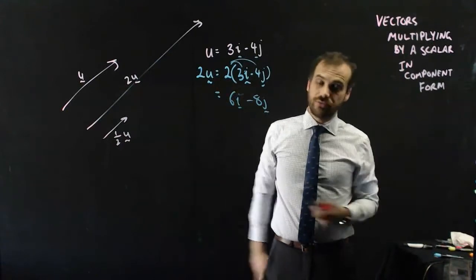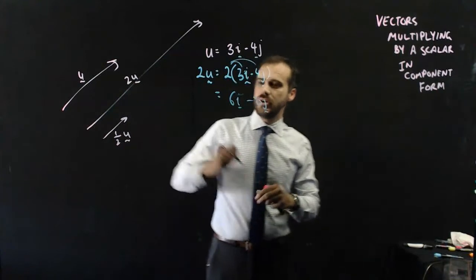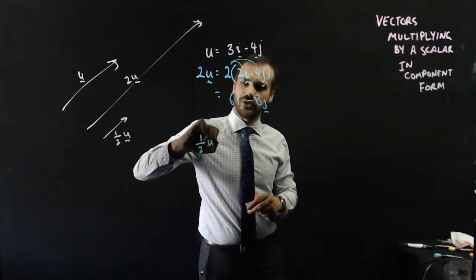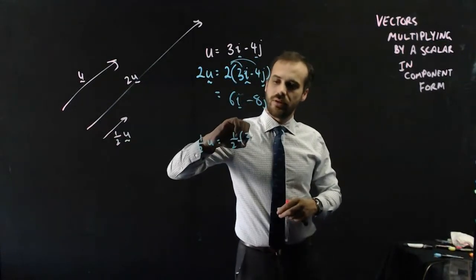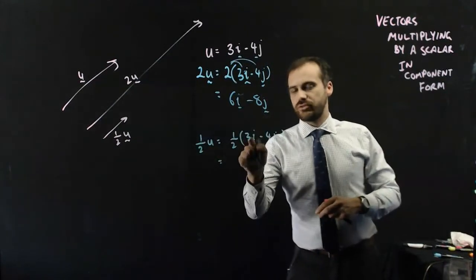Which we just multiply component form by 2. What if we wanted something that was half as long? Well, that's also not difficult at all. Half u is equal to half times 3i minus 4j, which is 3 over 2i.